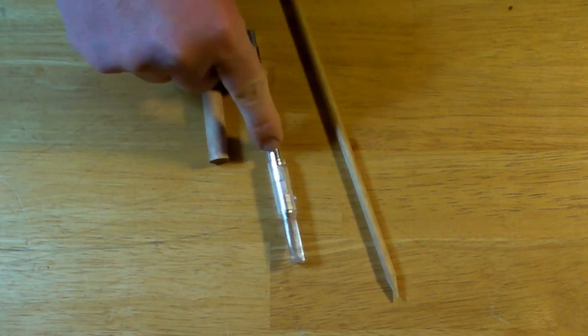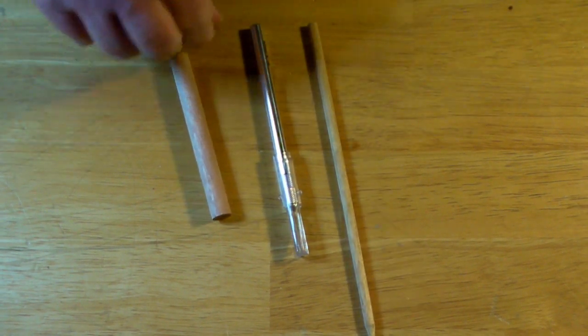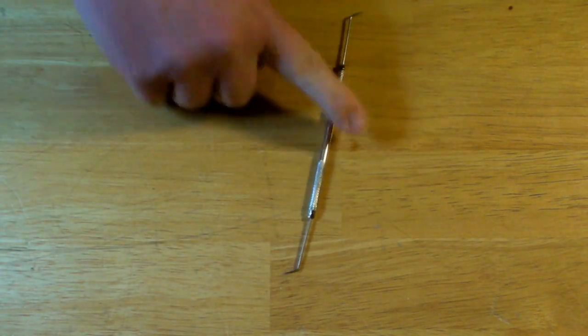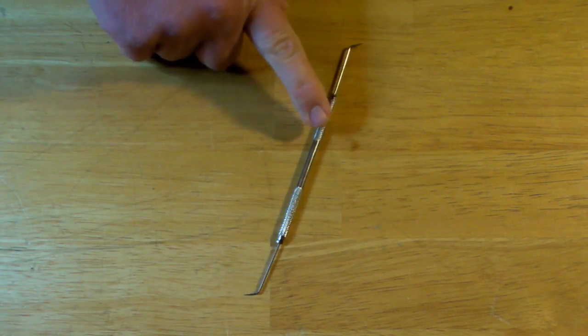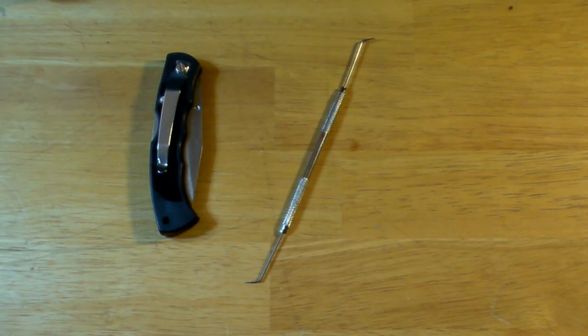Also for shaping curves, dowel rods or any other round object that you can use to curl things around. I have a dentist pick or dentist type pick that I use for getting into tight areas. And sometimes a pocket knife is helpful for bending things over.